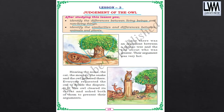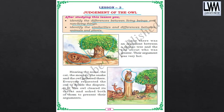In this story, they have explained using the argument between a mango tree and the soil. To solve that argument, there is one animal — the owl — that came to solve and give the decision. So let us read it and try to understand the lesson. Once there was an argument between a mango tree and the soil about who was greater. Their argument was very hot. Hearing the noise, the cat, the monkey, the snake and the owl gathered there. Everyone requested the owl to decide the dispute. The owl cleared its throat and asked both of them to present their arguments.